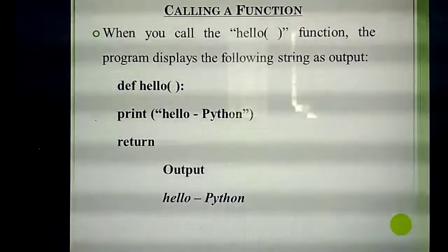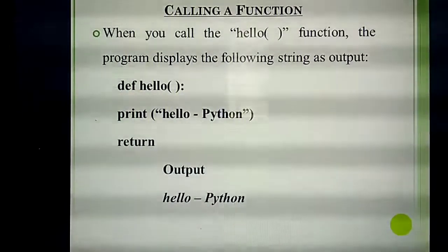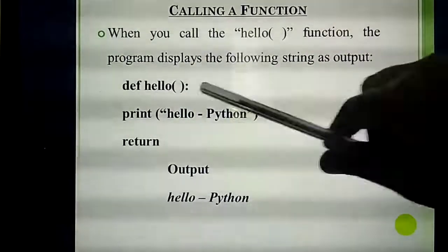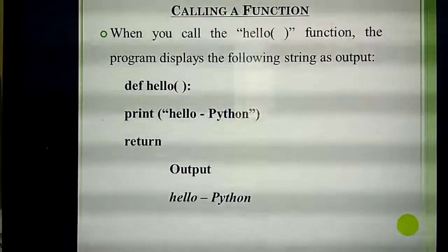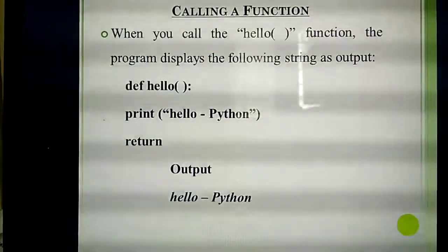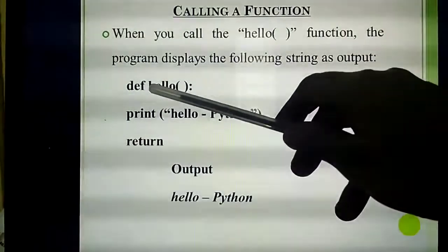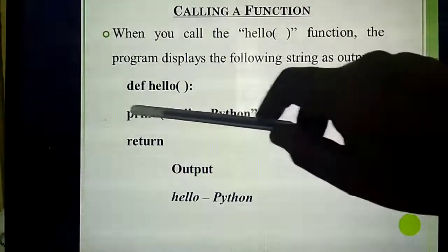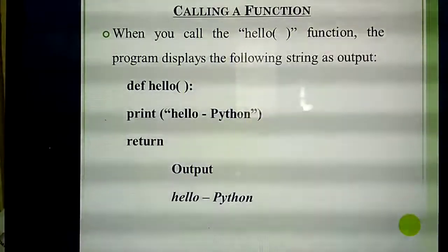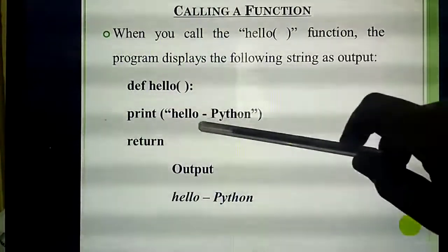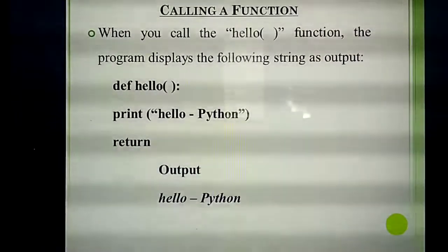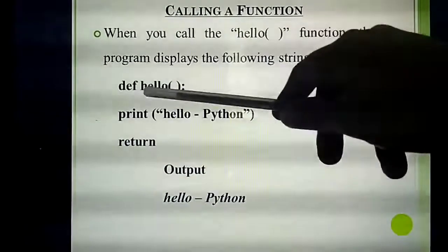Next is calling a function. Using the same example, the function name is 'hello'. To call the function, you write 'hello()'. The syntax is: 'def', keyword, then function name 'hello', then parentheses, then colon. Then inside, 'print("Hello Python")' and return. The output is 'Hello Python'.